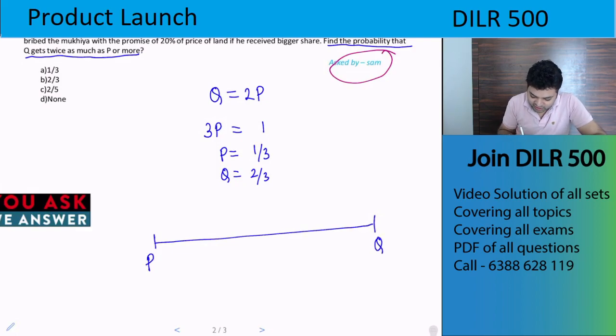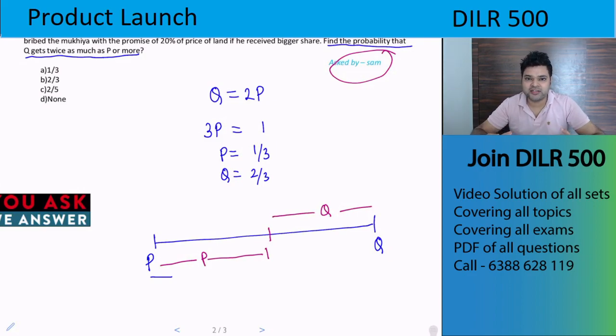From this direction, whatever point we take, let's say we took this point. Then the distance from here will be P's share, and the distance here will be Q's share. That is how we will decide the division of the land.